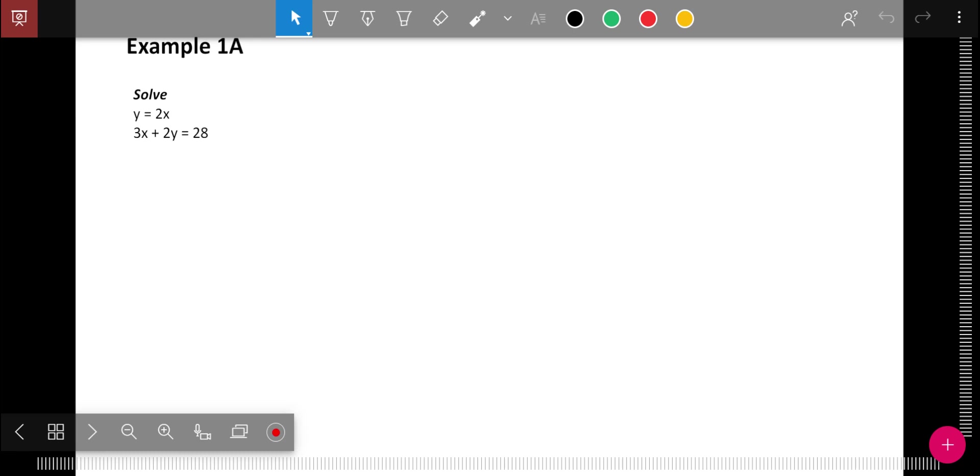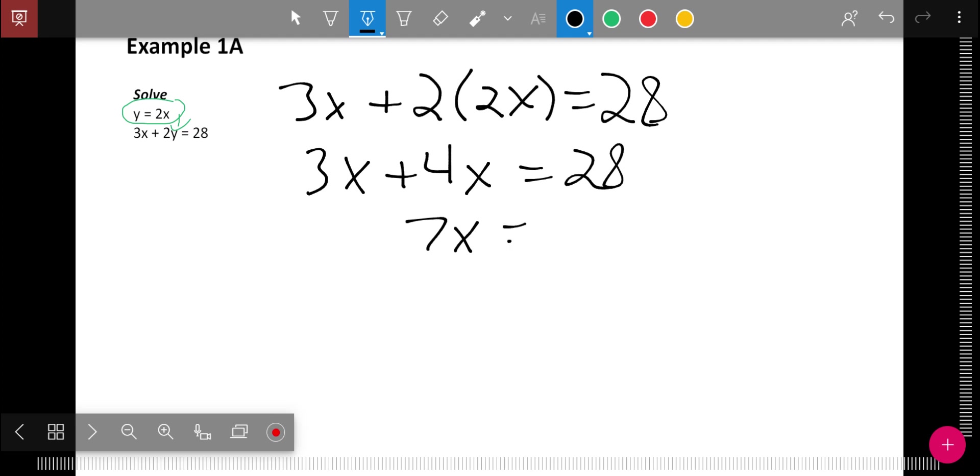I have to have one of my equations solved for a variable. This is nice because they already have it. That first equation is already Y equals. I am going to take that equation and plug it in for Y. So I have 3X plus 2. But instead of Y, I know Y equals 2X. Still equals 28. Do the math. 2 times 2X is 4X. Those add up to 7X.